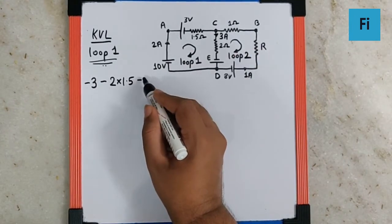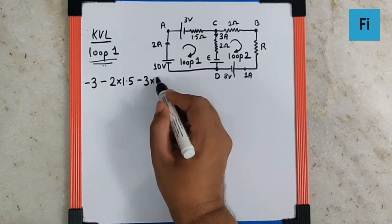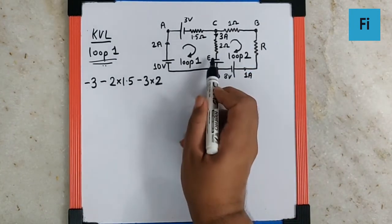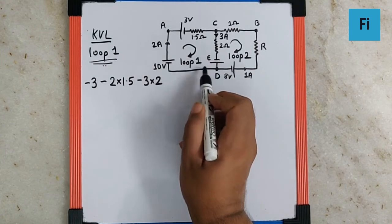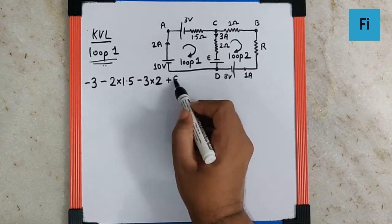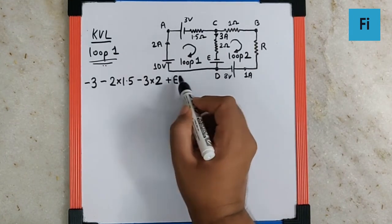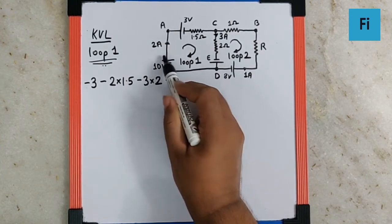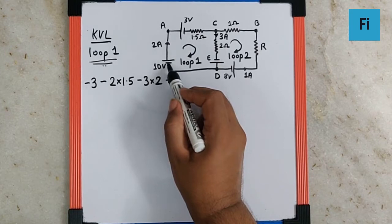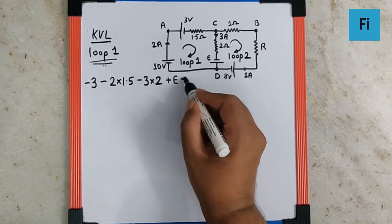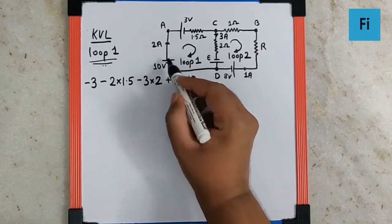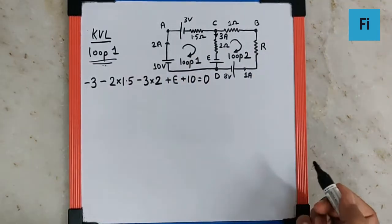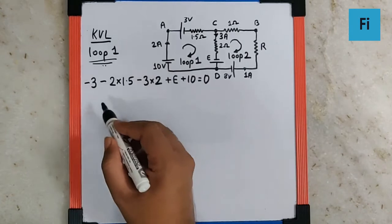The current is 3 A and resistance is 2 Ω, giving minus 6. The battery here is traversed from negative to positive terminal, so it contributes plus E. At point D there are no elements, and then we encounter the 10 V battery traversed from negative to positive, giving plus 10, before returning to point A.